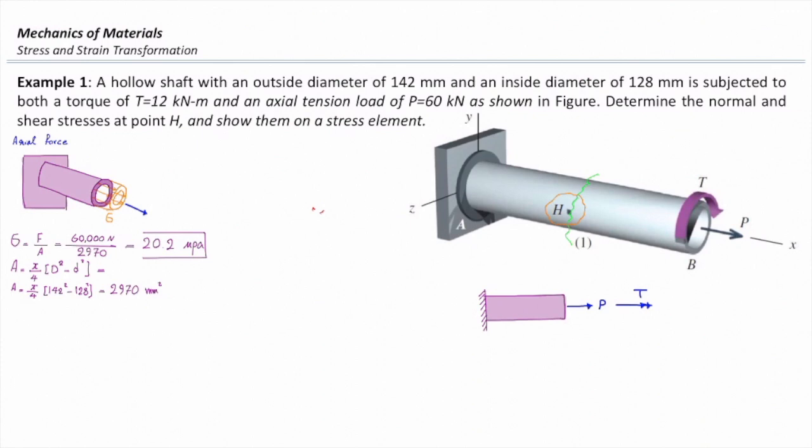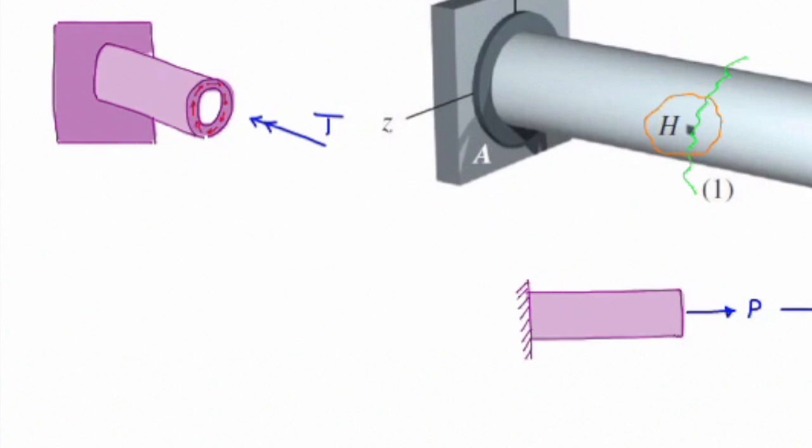Now let me talk about the torque. I want to see what kind of stress is developed because of that. We discussed about it - that would be shear stress. That shear stress is calculated from this equation, Tc over J. T is torque, C is distance of that point from centroid, and J is polar moment of inertia.